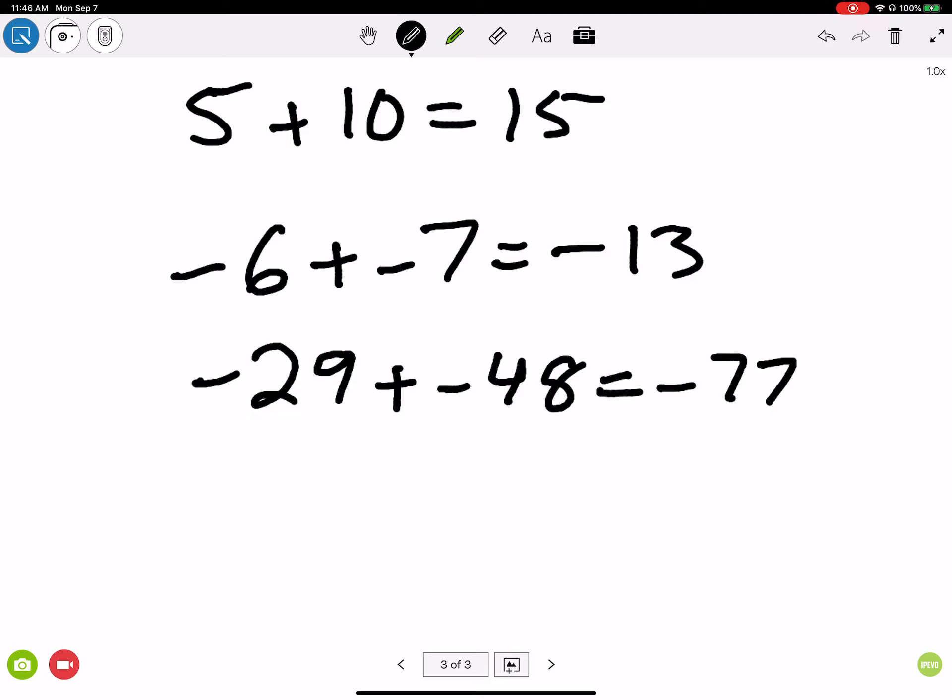Okay, if they're not the same sign, so for example, what if I gave you a problem like negative 7 plus 12 or 18 plus negative 30? Now what? Well, now we're going to use an acronym called USB. This means that if I have unlike signs, then I'm going to subtract the bigger number by the smaller number.